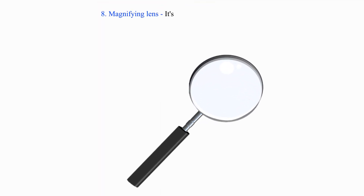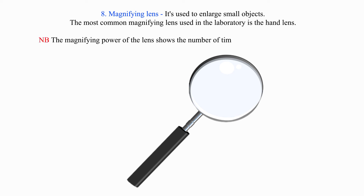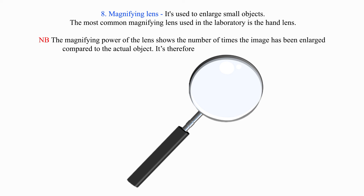8. Magnifying lens — it is used to enlarge small objects. The most common magnifying lens used in the laboratory is the hand lens. Note: the magnifying power of the lens shows the number of times the image has been enlarged compared to the actual object. It is therefore indicated on the lens, e.g. ×10, ×5.